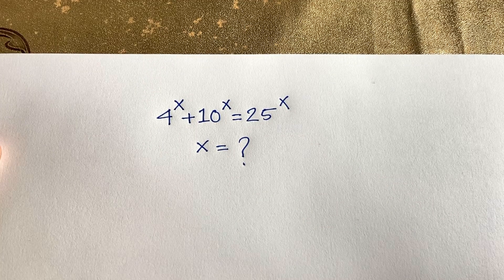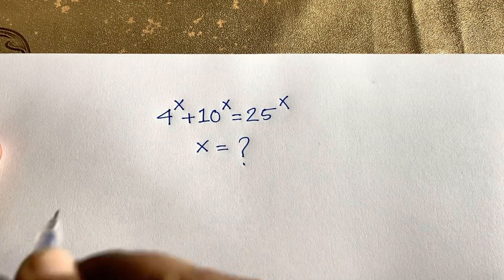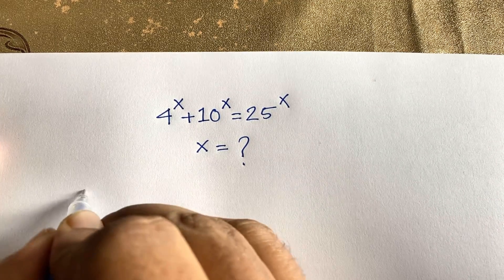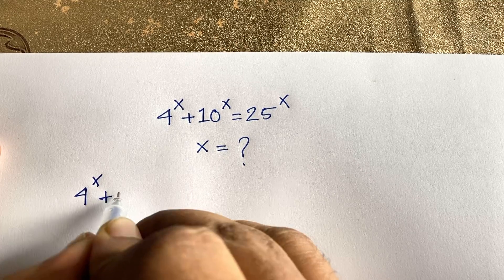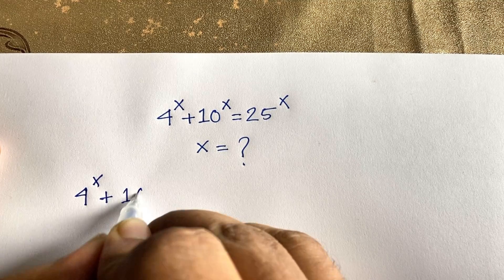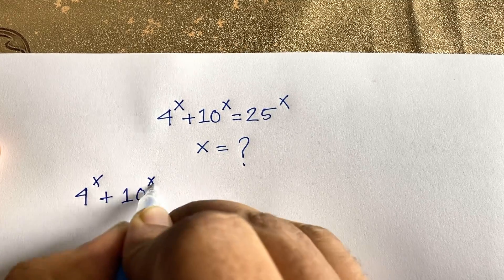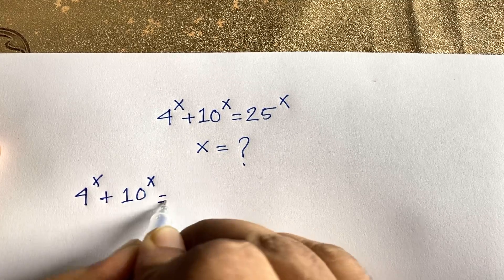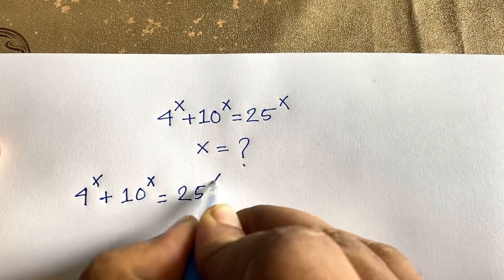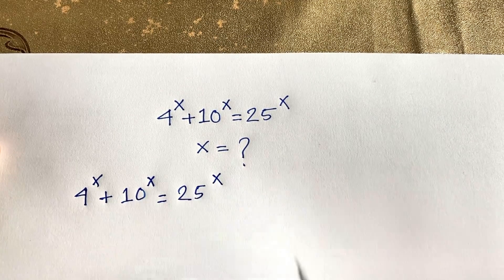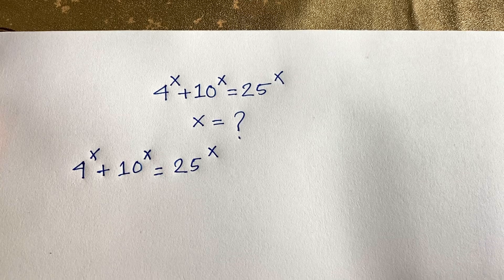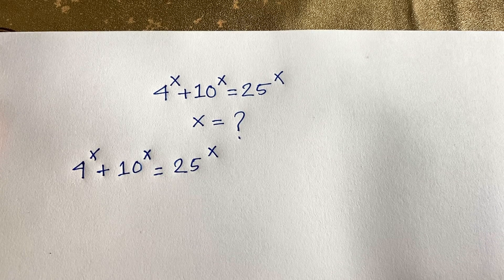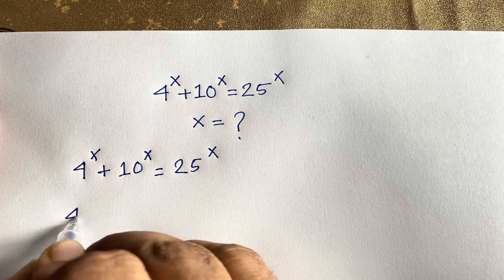Our question is: 4^x + 10^x = 25^x. Now at this moment I divide both sides by 25^x, so it will be 4^x over 25^x plus 10^x...